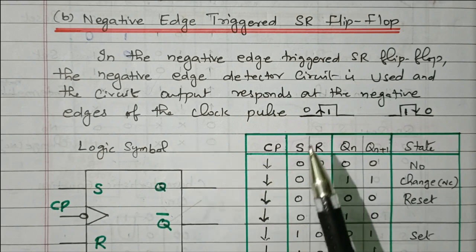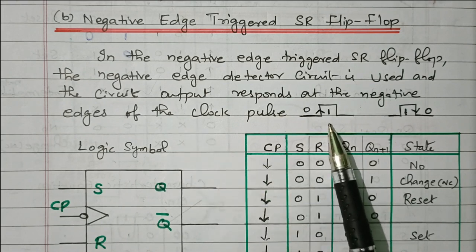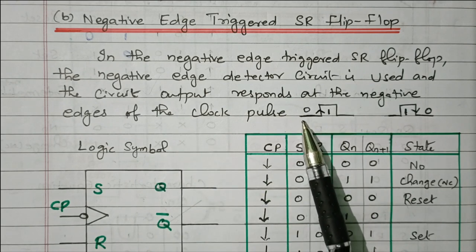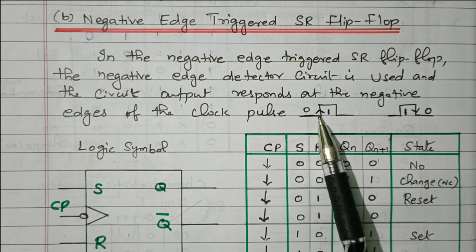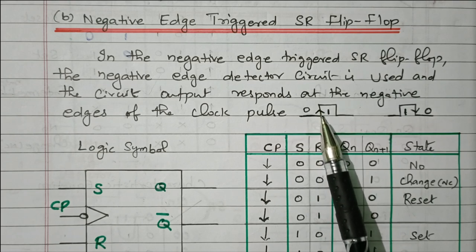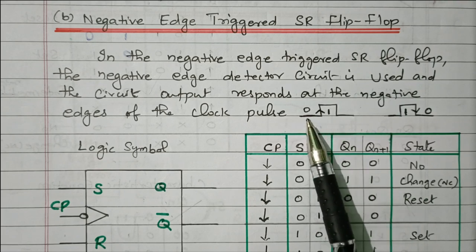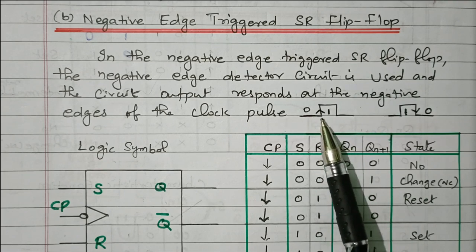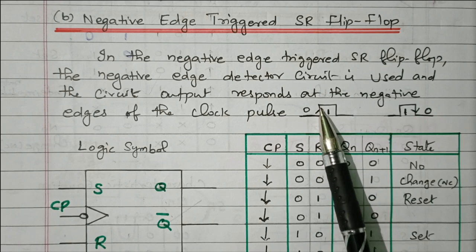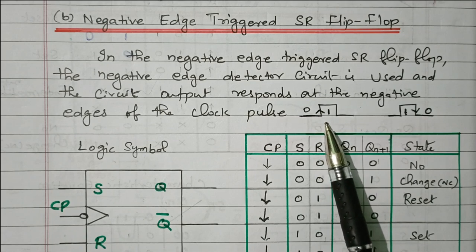Now we will see what is the negative edge. Consider a clock pulse changing from 0 to 1 — this is a rising edge, called a positive edge clock pulse. Whenever it changes from 0 to 1, the signal goes upward. This is the positive edge triggered clock pulse.